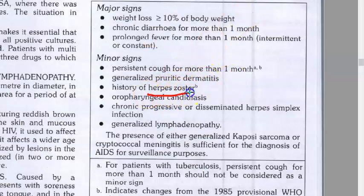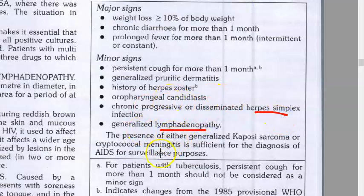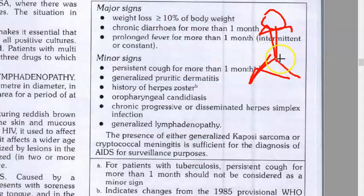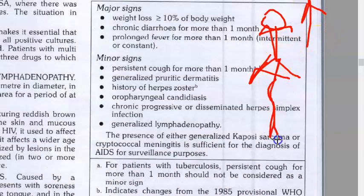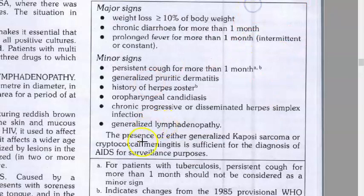Minor signs include cough, dermatitis, herpes zoster — which basically comes when the person is immunocompromised, so AIDS is suspected — candidiasis, herpes simplex infection, and generalized lymphadenopathy, because one stage in HIV infection is lymphadenopathy. So for major signs: weight loss greater than or equal to 10 percent, diarrhea for more than one month, and fever for more than one month.